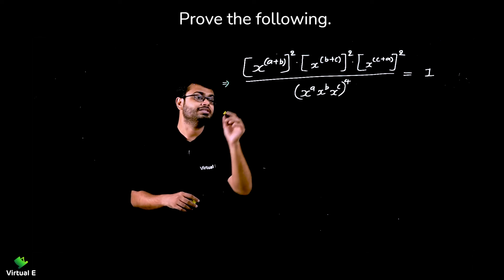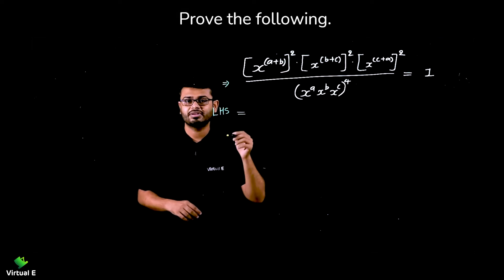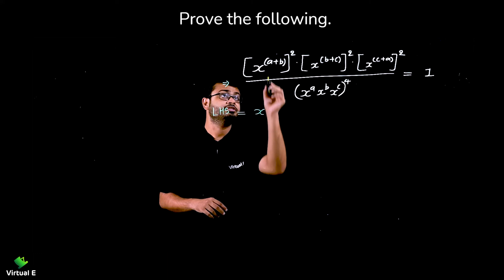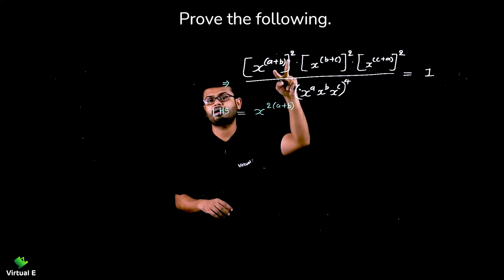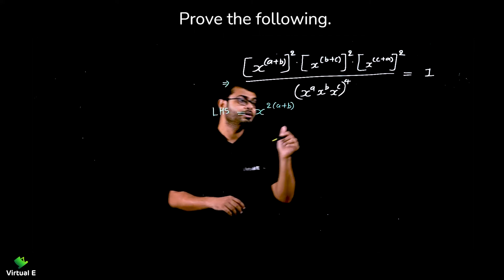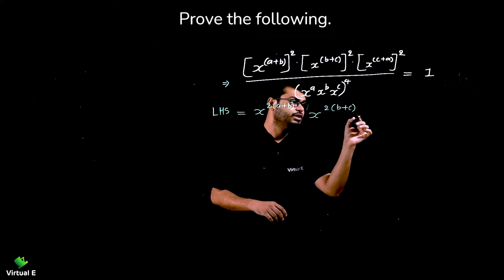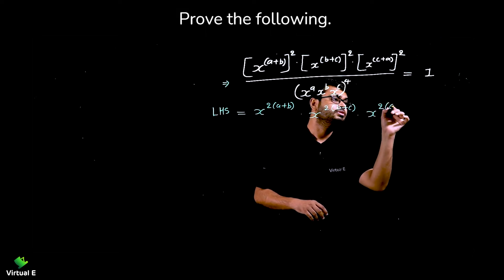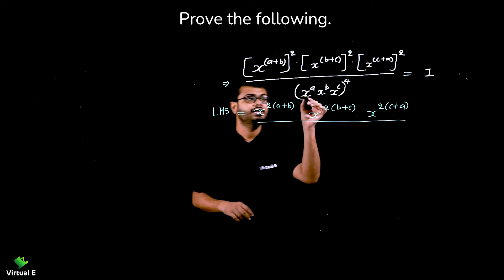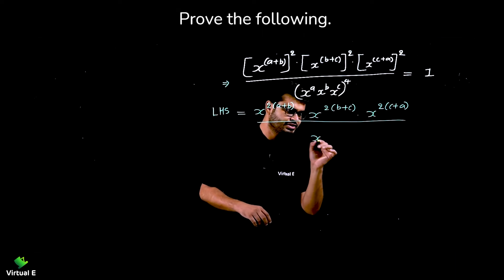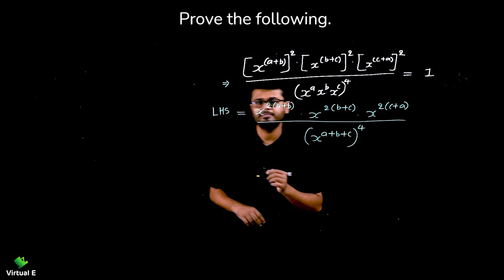So let's write LHS is equal to: let's start simplifying — X raise to twice into a plus b. Why twice into a plus b? Because we have two powers, so we multiply. Into X raise to twice into b plus c, into X raise to twice into c plus a. And in the denominator, X is the base, so we can add the powers: X raise to a plus b plus c, whole raise to 4.